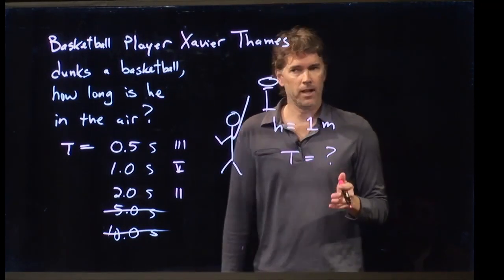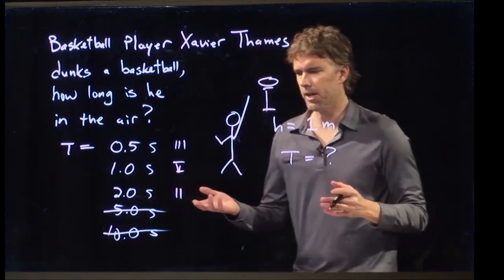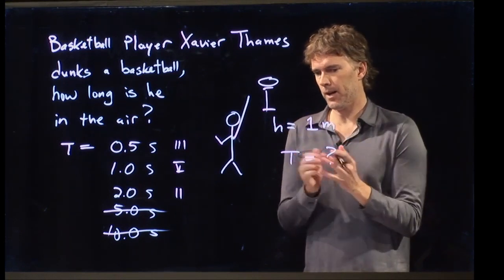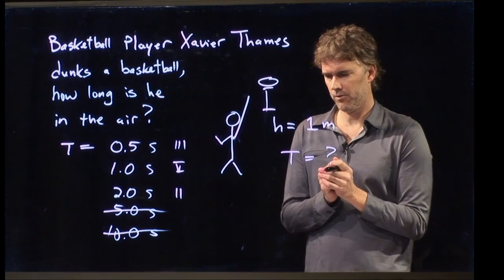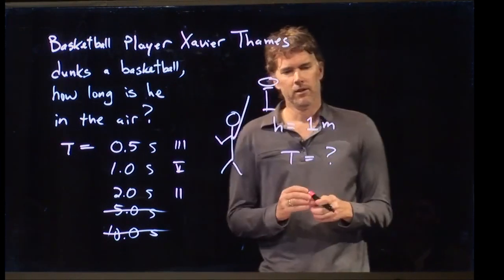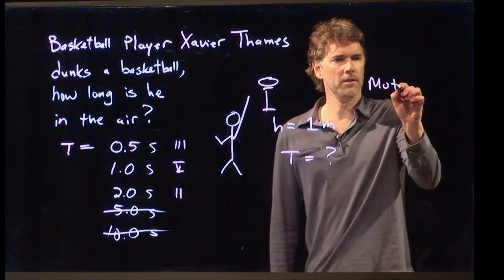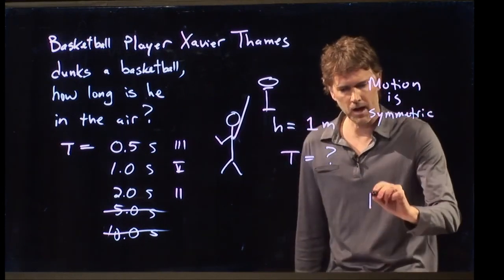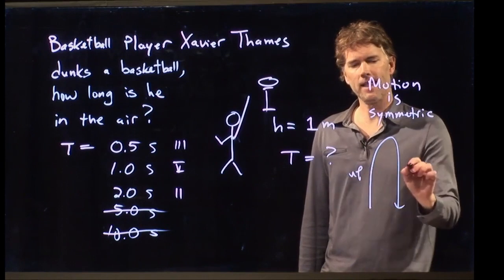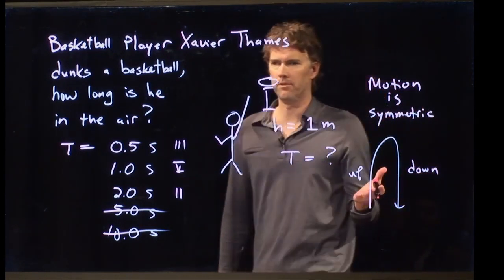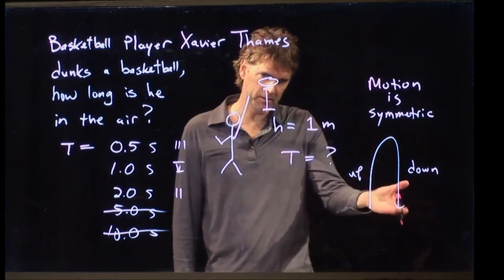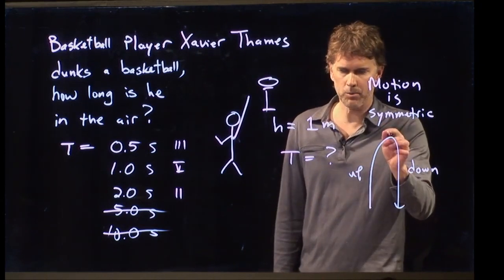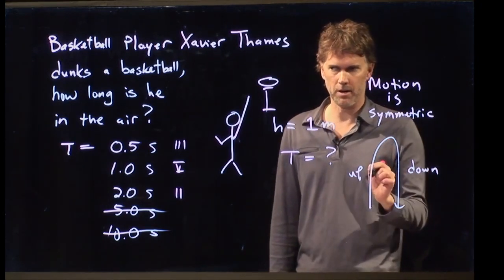And let's now calculate how long he is in the air. So, we are not given a whole lot of information here. We don't have anything about the initial velocity as he jumps off the ground. And somehow, we've got to come up with this time. So, how can we attack this problem? The motion is, in fact, symmetric in this case. Going up is exactly the same as going down. It's going to take the same amount of time to go up as he takes to go down.